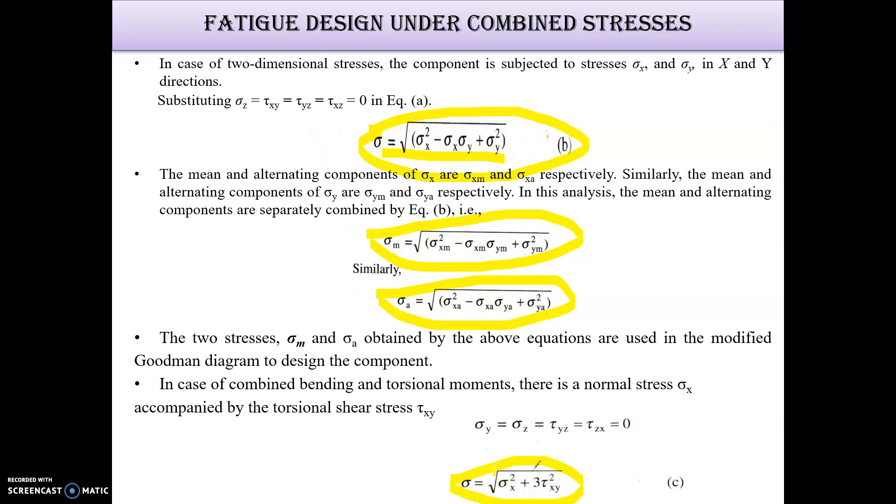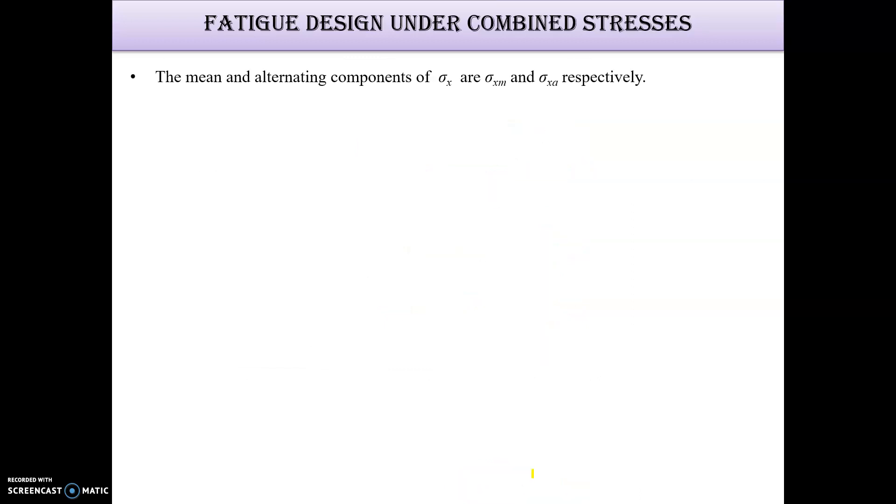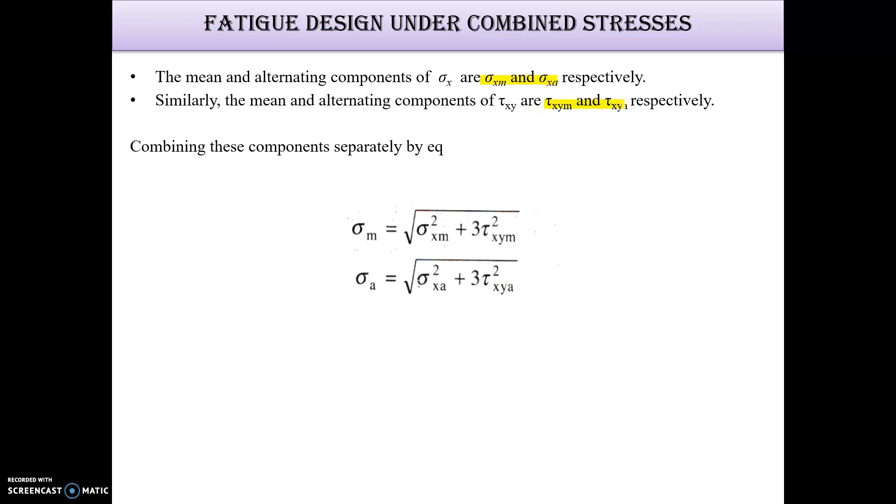So σ_x, σ_xm and σ_xa are the mean and the amplitude stress. For τ_xy, τ_xym and τ_xya, this equation will become—mean stress will be in this manner and amplitude stress will be in this manner.